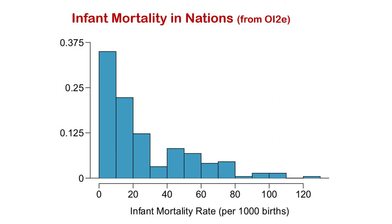Infant mortality in nations — another long tail distribution, but not quite as much like a crazy ski slope. This is infant mortality rate per 1,000 births, and this is the proportion of nations. So this has been standardized — up here would be 37.5% of nations included in this study. You have that ski slope effect again.